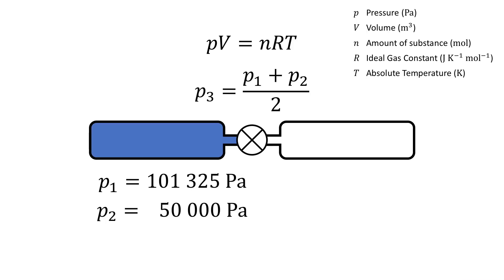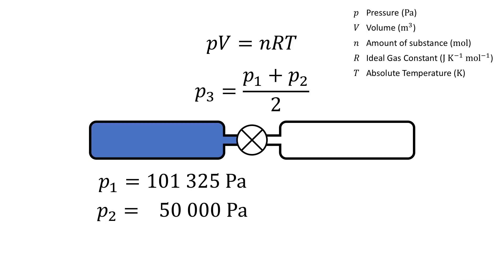But now we do it for different initial conditions. Let's say that tube one has a pressure of 101,325 Pascal and tube two has a pressure of 50,000 Pascal. The resultant pressure is then 75,662 Pascal. No problem there.